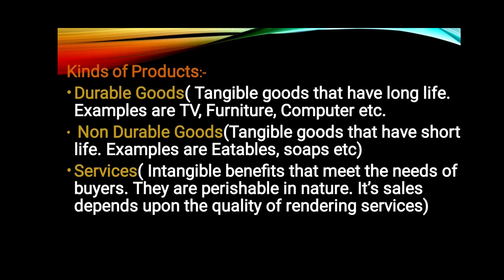Next is kinds of products. Products are different, such as durable goods. Durable goods are tangible goods which you can touch and are long-lasting, with benefits for the long term. Next is non-durable goods — these are tangible goods that have a short life. After using these goods, they are finished. Like soap, when you use soap it won't last long; after some time it will be finished. Similarly, eatable items are non-durable goods that have a very short life.